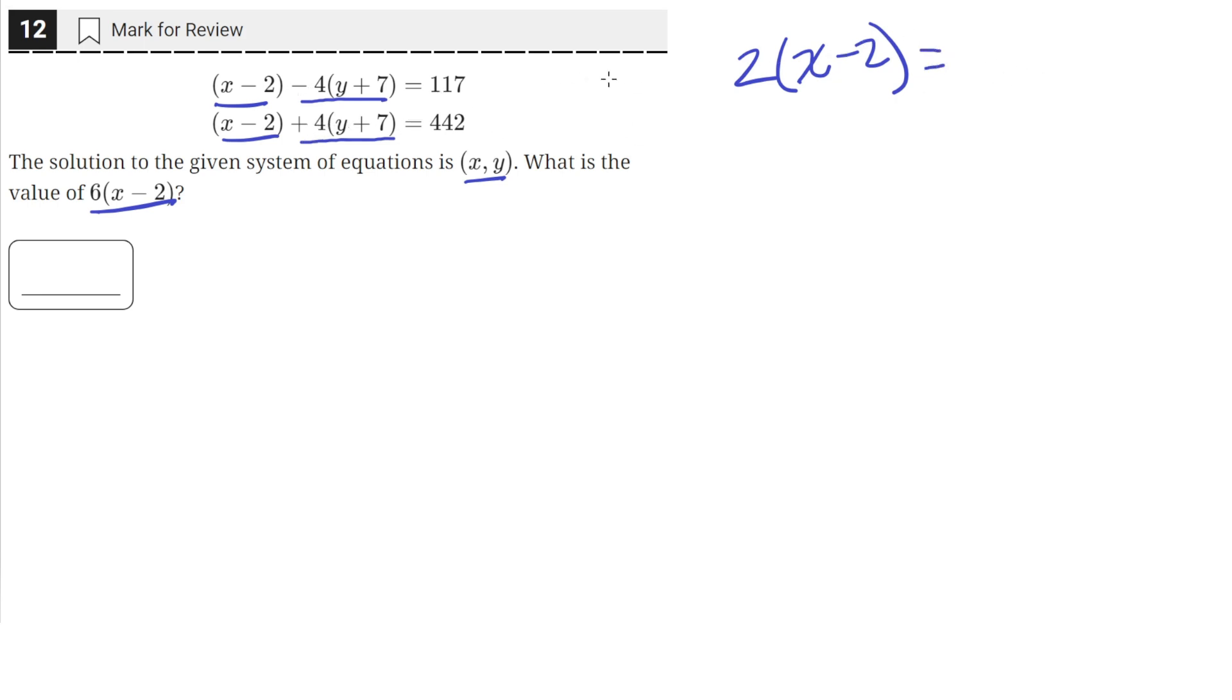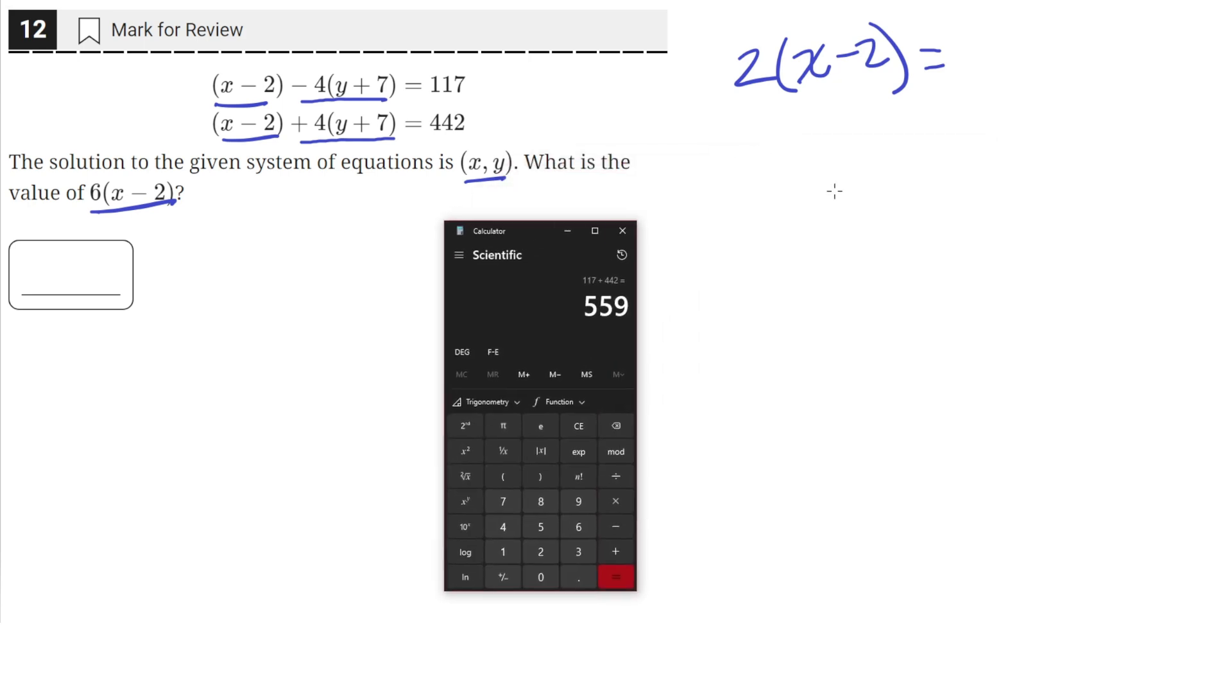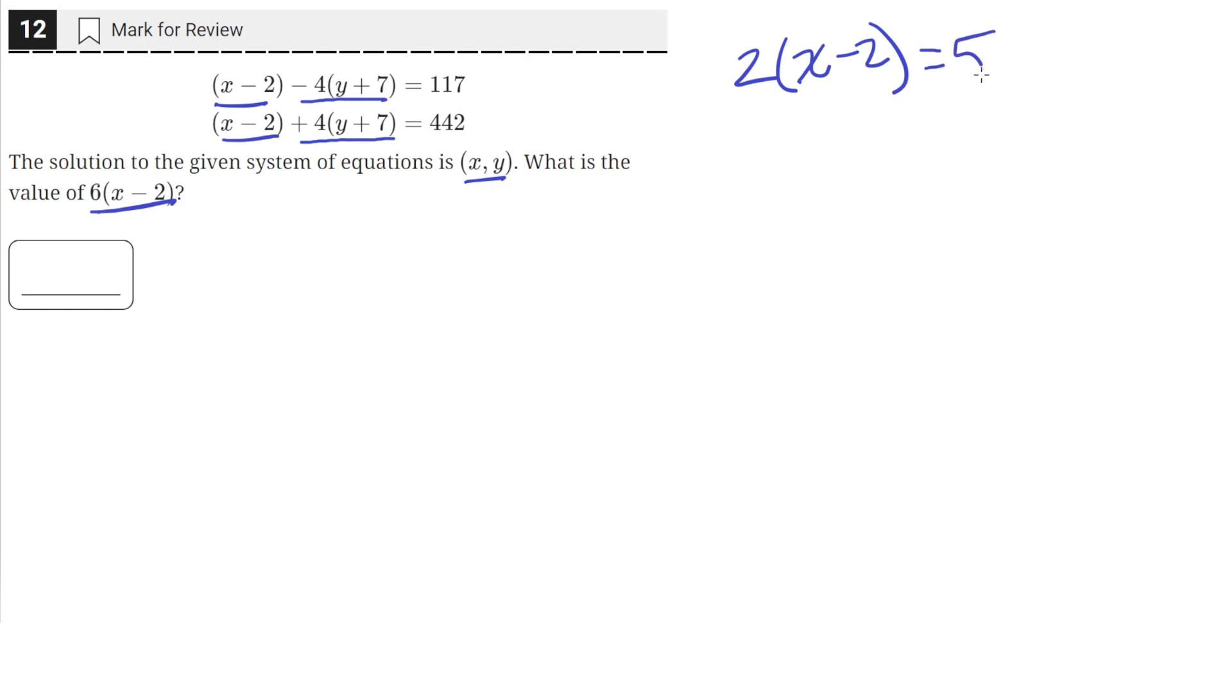And on the right hand side we'll just add these two numbers together. So 117 plus 442 that's equal to 559.